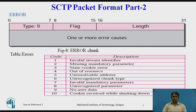Error: The error chunk is sent when an endpoint finds some error in a received packet. Note that the sending of an error chunk does not imply the aborting of the association. The figure shows the format of the error chunk.